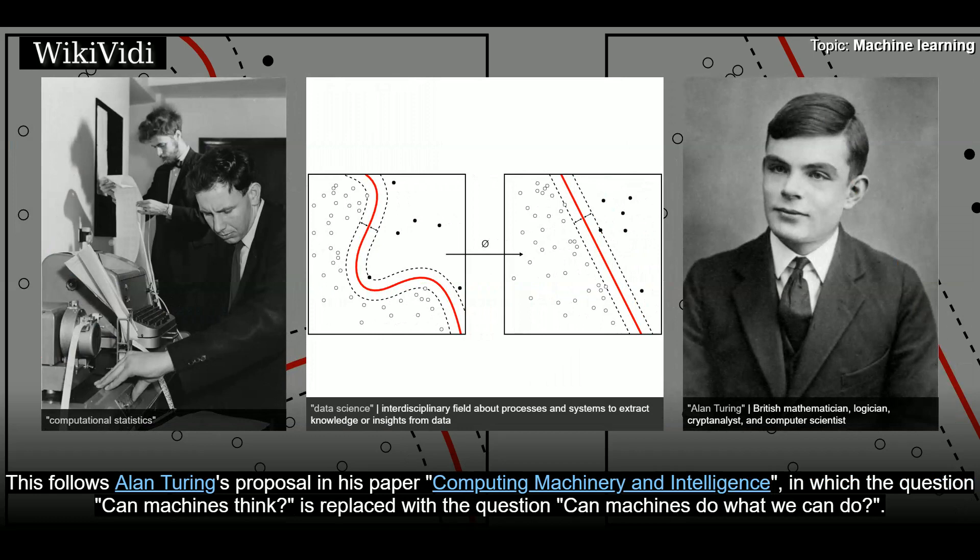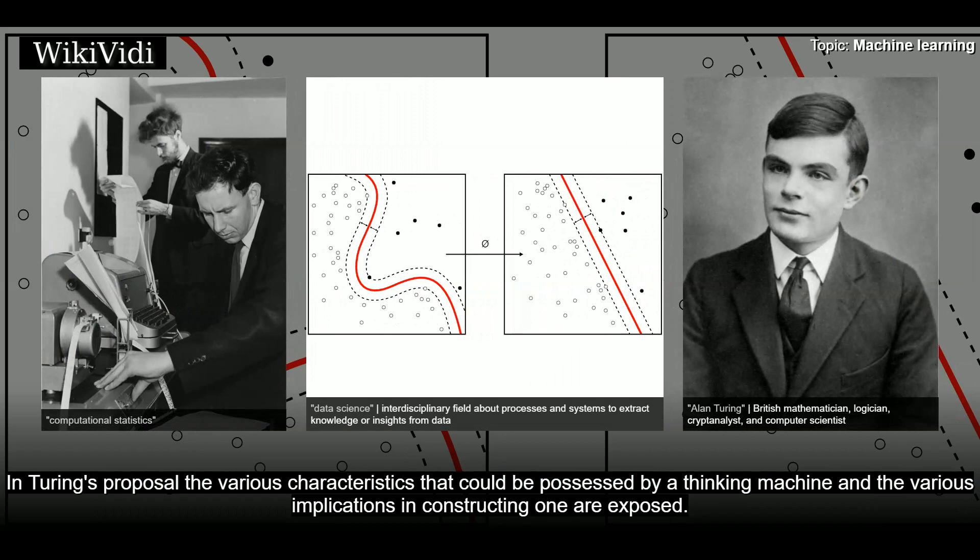In which the question, Can machines think? is replaced with the question, Can machines do what we can do? In Turing's proposal the various characteristics that could be possessed by a thinking machine and the various implications in constructing one are exposed.